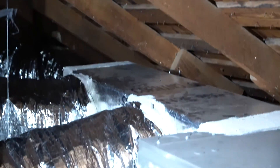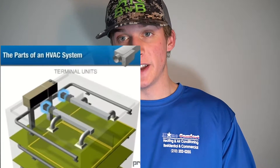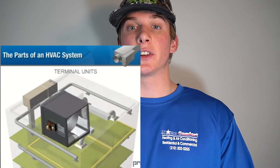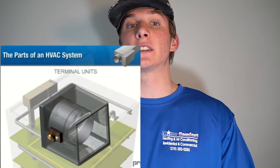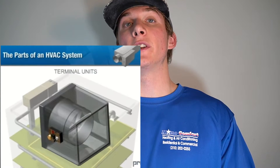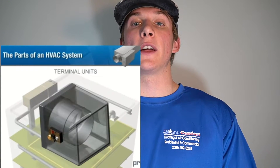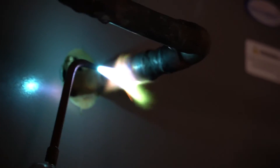Then the air moves to the air handler, where the cold air from the chiller is distributed through the ductwork into the building. Terminal units, or automated dampers, are used to control the amount of airflow going to a certain part of the building. This is linked with your thermostat. The colder the desired temperature, the more air that is passed through the terminal unit. Heating coils are also used to heat the building during the colder months.